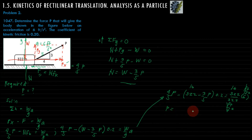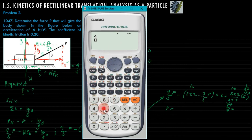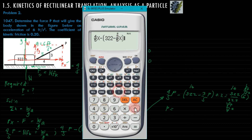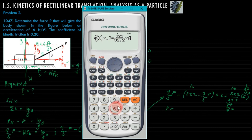Solving for P: 4 over 5 P minus 0.2 times (322 minus 3 over 5 P) equals 322 over 32.2 multiplied by 6. Solving this equation gives the answer: force P equals 135.22 pounds.